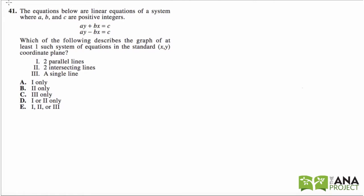Problem number 41. The equations below are linear equations of a system where a, b, and c are positive integers: ay + bx = c, ay - bx = c. Which of the following describes the graph of at least one such system of equations in the standard xy coordinate plane?